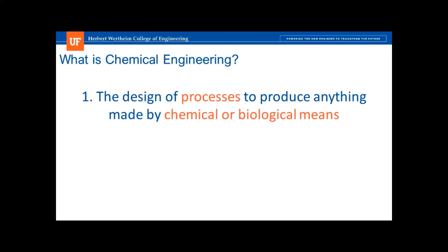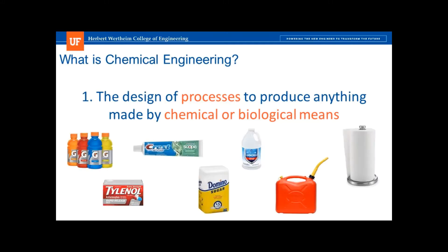The amount of goods that fall under this definition of 'made by chemical or biological means' is quite extensive, and it can change the way you view the world. For me, almost every trip to the grocery store or pharmacy leaves me wondering how certain products were manufactured. For instance, some examples of products made by chemical or biological means include sports drinks, pharmaceuticals, toothpaste, sugar, ammonia, gasoline, and paper towels, among many others. These products are generally produced from some combination of raw materials in large quantities, and a chemical engineer might design or oversee the process that manufactured these goods.